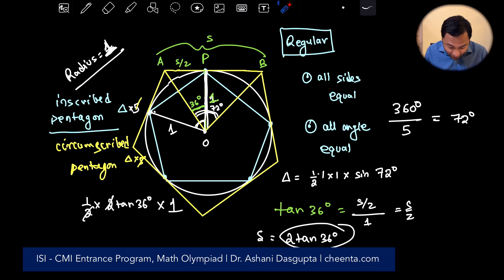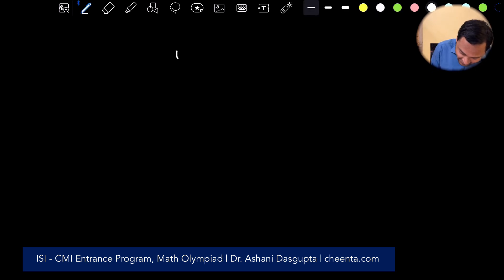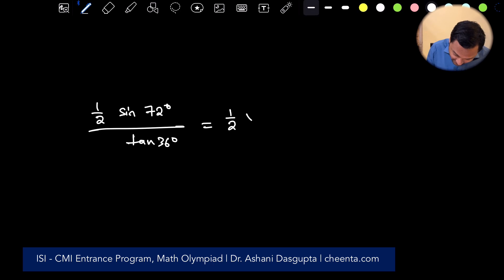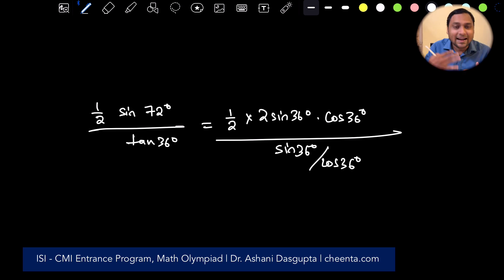So we have found the area of the smaller triangle, which is half of sine 72. Area of the big triangle is tan 36. So let's now do the ratio of the two areas. Half sine 72 degree divided by tan 36 degree. Now we can use compound angle formulas here. So it's half of 2 times sin 36 degree times cos 36 degree divided by sin 36 degree divided by cos 36 degree. Tan is sin by cos. 2, 2 cancels. This, this cancels. So the final answer is cos square 36 degree. This is the final answer. The ratio of the inside pentagon divided by the outside pentagon is cos square 36 degree.